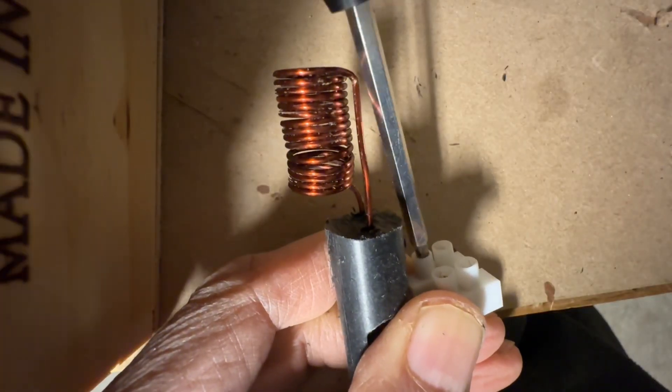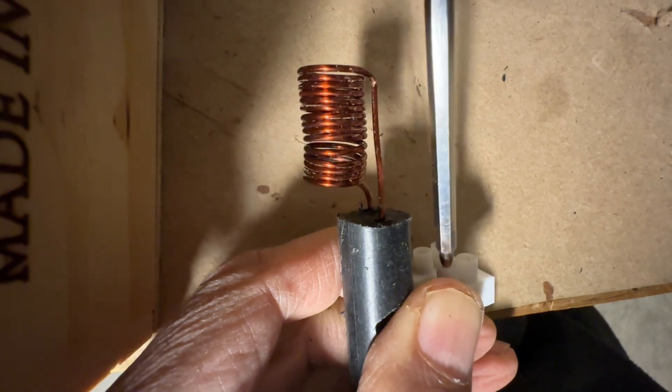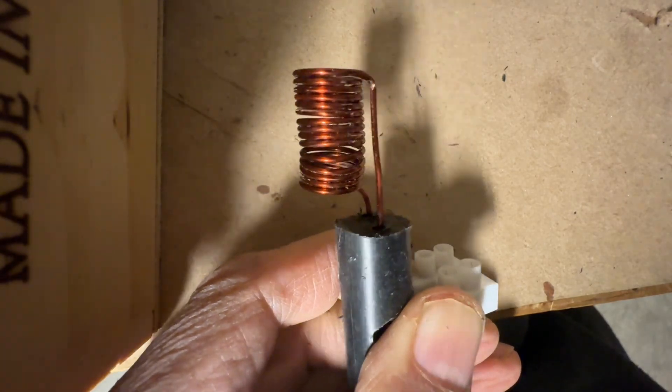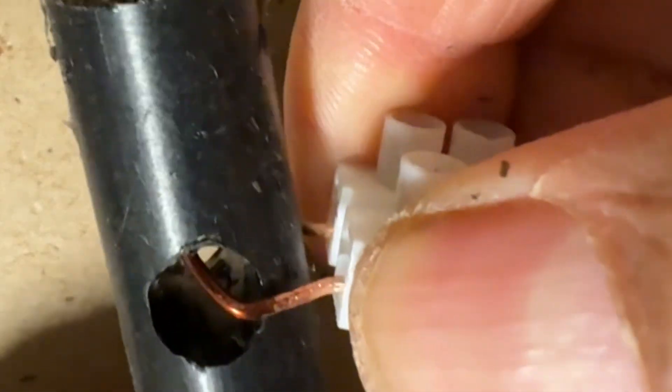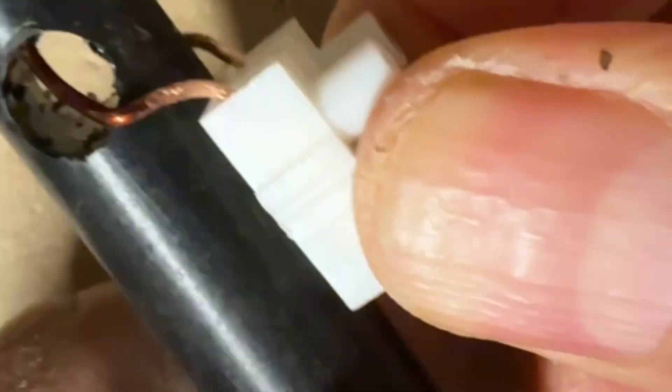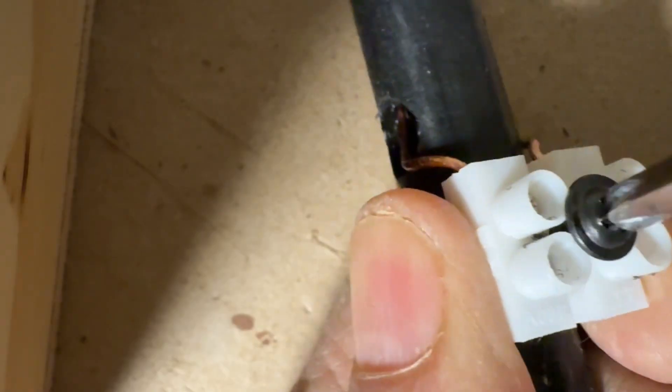Now we're adding a terminal connector so we can easily connect it to the modified switch mode power supply. This can be further secured to the Delrin rod using a screw.